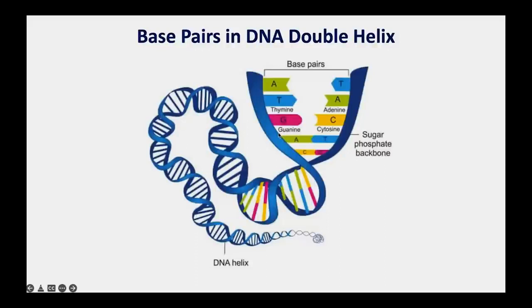The DNA double helix consists of two strands. The blue part is the sugar-phosphate backbone, and coming off that backbone are the bases: adenine (A), thymine (T), guanine (G), and cytosine (C). They pair together in a very specific way: A pairs with T, T with A, G pairs with C, and C with G—and only in that way. When we read the sequence of a gene, we're reading those bases—A, T, G, C—along the strand of DNA.